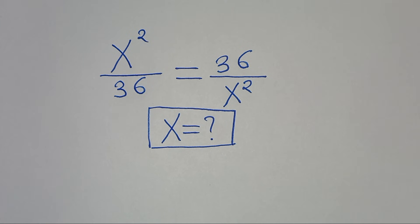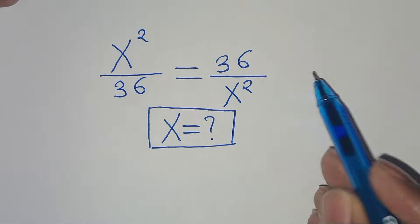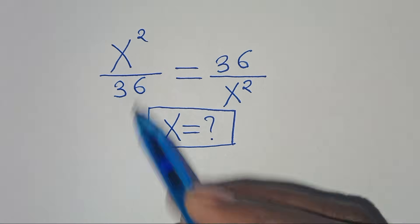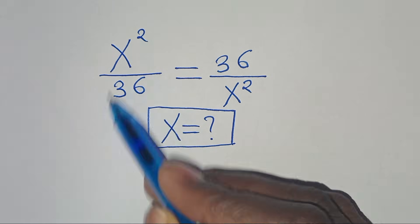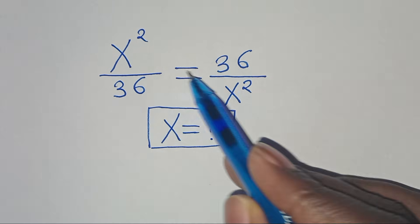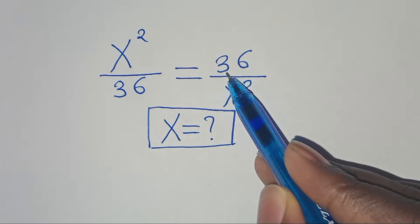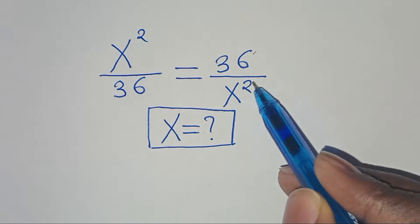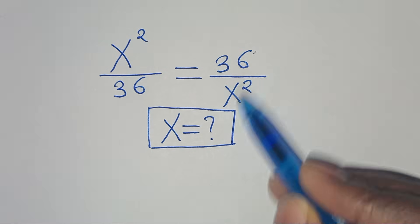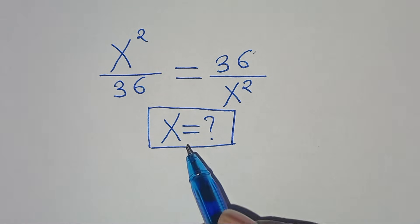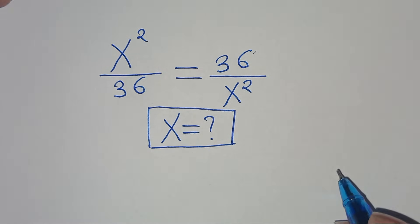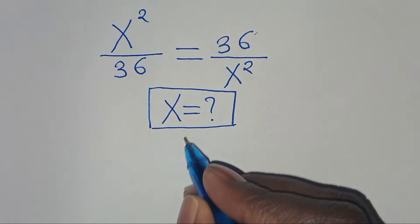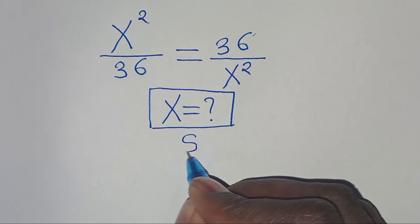Hello everyone, you are welcome to solve this nice algebra problem, which is x squared divided by 36. This is equal to 36 over x to the power of 2. So what is the value of x, or what are the values of x?